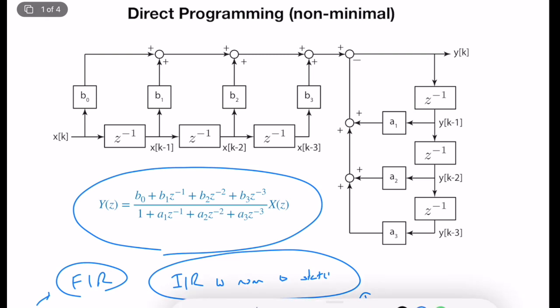For example, here we have a third-order transfer function. It has five coefficients: b0, b1, b2, b3, a1, a2, a3. We want to realize it with the minimum amount of delay elements.